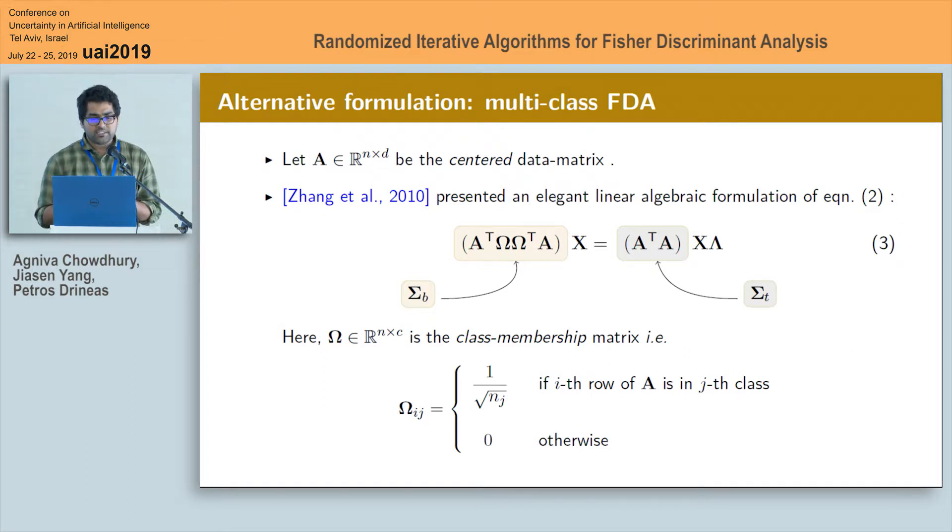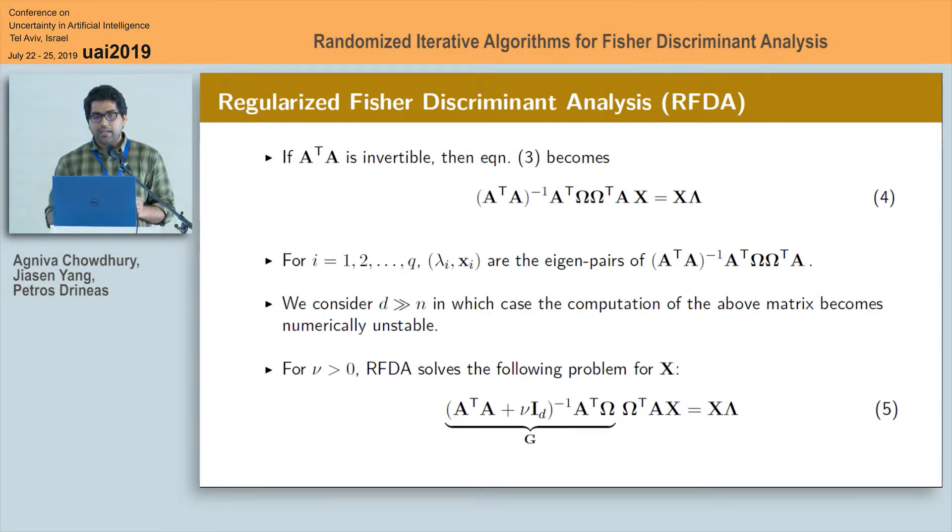and the total scatter matrix was expressed as A transpose A. Here omega is an N by C matrix called the rescaled class membership matrix which is defined on the slide. Now look at the right-hand side of equation 3. If this matrix A transpose A is invertible then we can rewrite this as in equation 4 and the pairs lambda I, Xi are the corresponding eigen pairs of the problem.